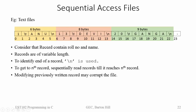One record contains role number and name, and the records are of different sizes — they are of variable length. The first record is 6 bytes, the second is 8 bytes, and the third is 9 bytes. When we write code to identify the end of a record, we use the newline character. Using functions like fgets or fscanf we can extract the first line, and with fscanf we can separate role number and name.